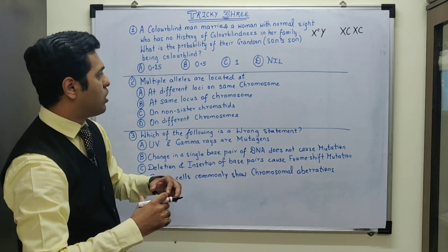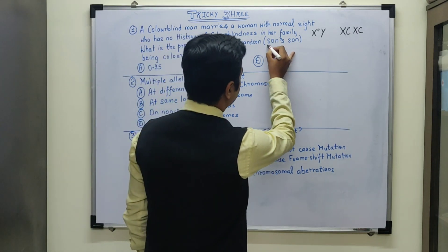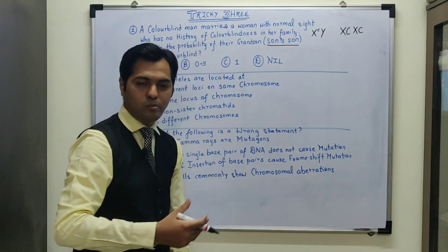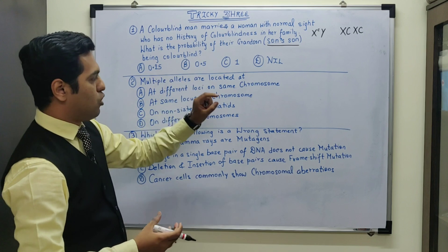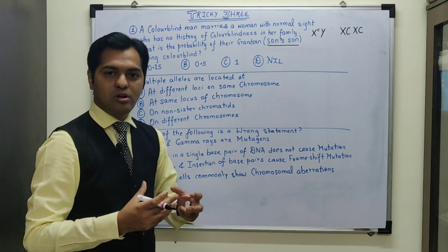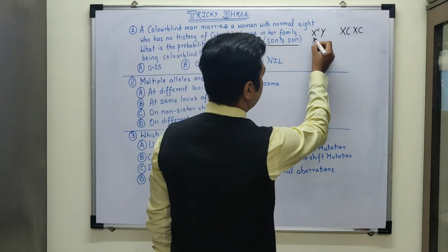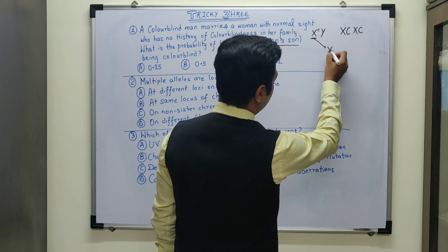Now what has been asked is what is the probability of their grandson? Specifically, they have mentioned son's son, not daughter's son. What is their probability? So as per the knowledge about crisscross inheritance, from the father, this recessive gene will be transmitted into the daughter.